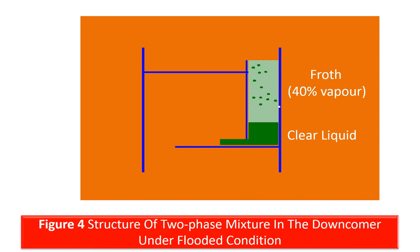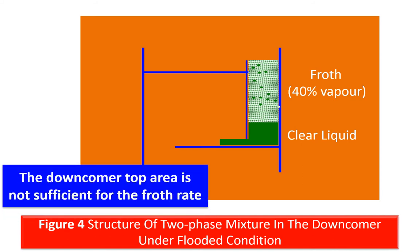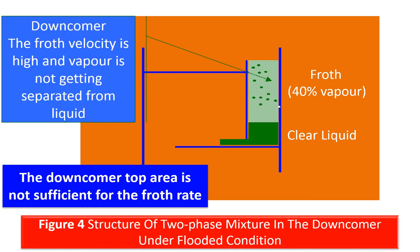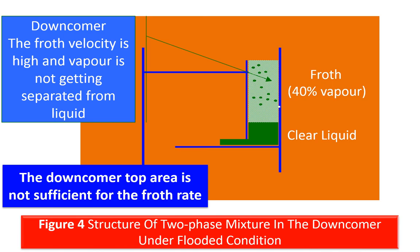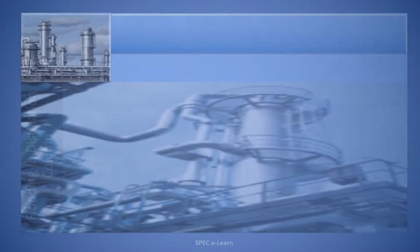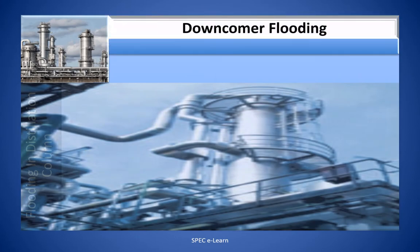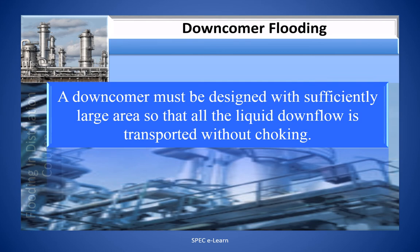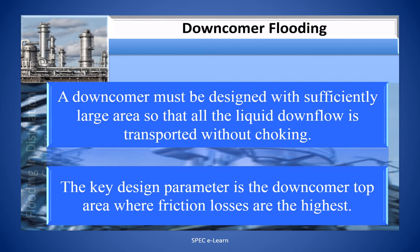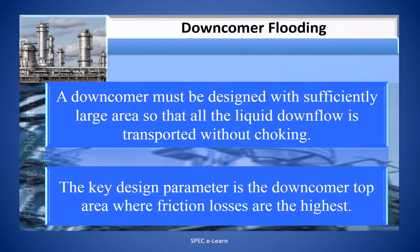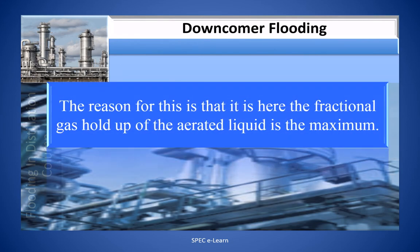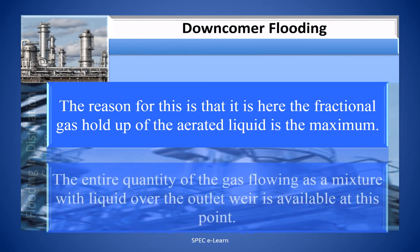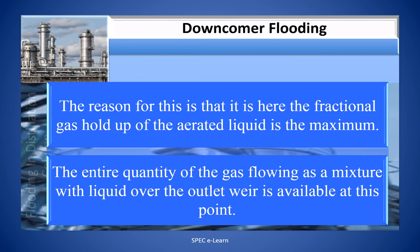This figure illustrates the structure of the two-phase mixture in the downcomer under flooded conditions. The downcomer top area is not sufficient for the froth rate — the froth velocity is high and vapor is not getting separated from the liquid. The downcomer must be designed with a sufficiently large area so that all liquid downflow is transported without choking. The key design parameter is the downcomer top area, where friction losses are highest, because it is here that the fractional gas holdup of the aerated liquid is at its maximum.